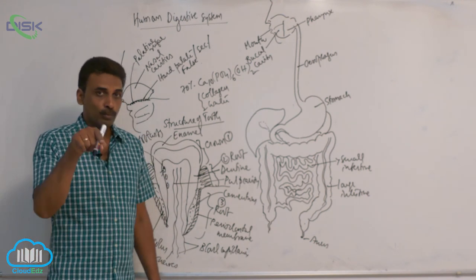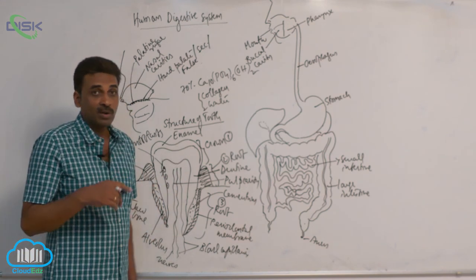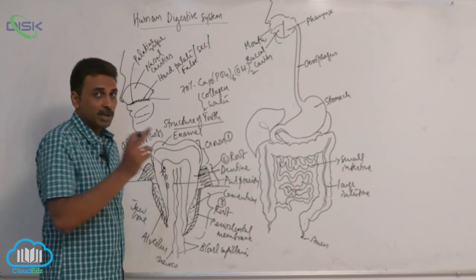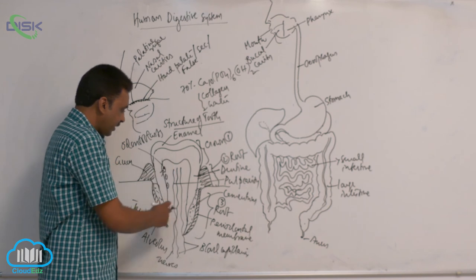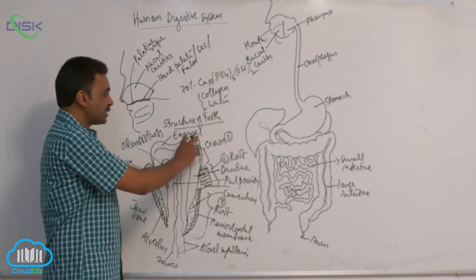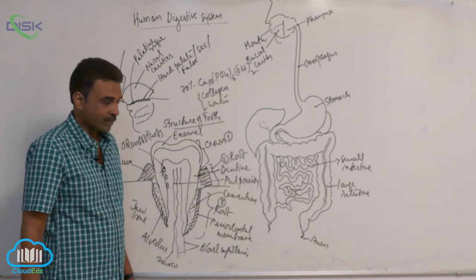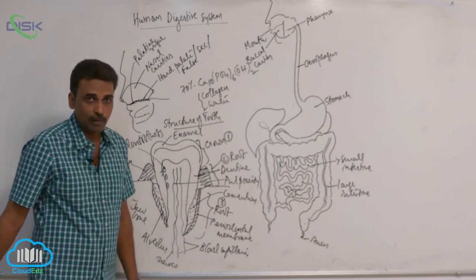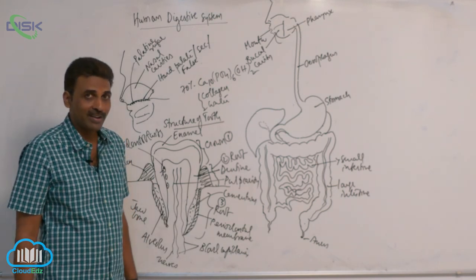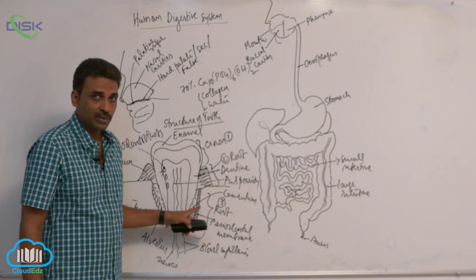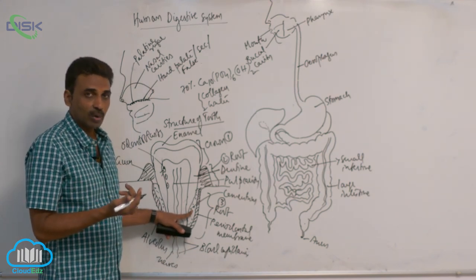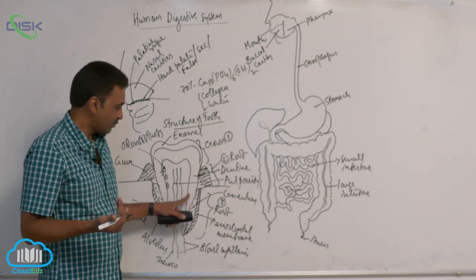Dentine originates from odontoblast cells, which are mesodermal in origin. Enamel originates from ameloblast cells, which are ectodermal in origin. Dentine is similar to bone but haversian canals are absent. Dentine and cementum both contain collagen, but enamel does not. The hardest substance in the body is enamel, present on the exposed crown of the tooth. The part embedded inside the jaw bone sits in a cavity called the alveolus. Outside the dentine in the alveolus is the periodontal membrane, made of dense fibrous connective tissue, and inside that is cementum — a softer form of dentine.